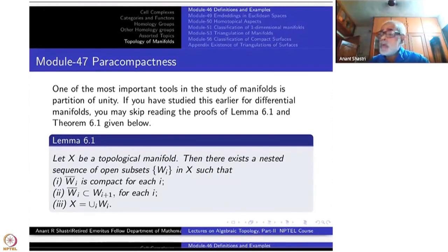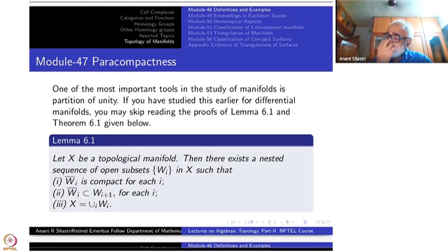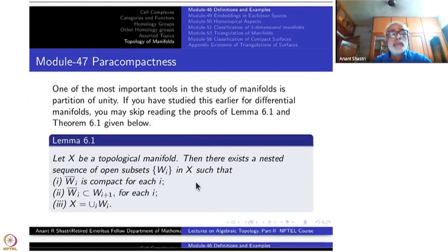If you have seen this proof in differential topology — like every open subset of R^n is paracompact — the proof there is much simpler. What you would be doing there is not only studying paracompactness but also studying smooth partition of unity, so the proof is slightly less easy. But the proof more or less repeats the steps that you have gone through in the case of a subset of R^n being paracompact.